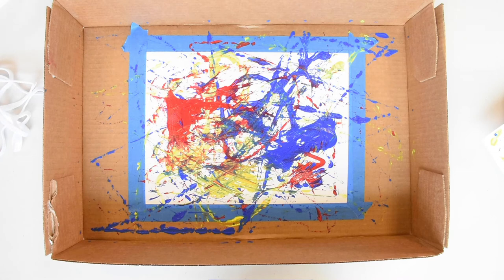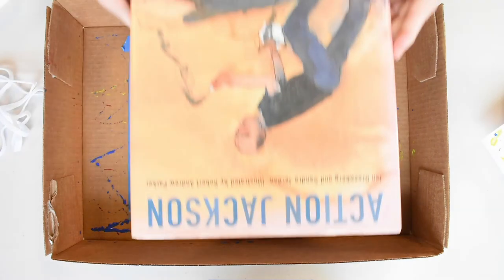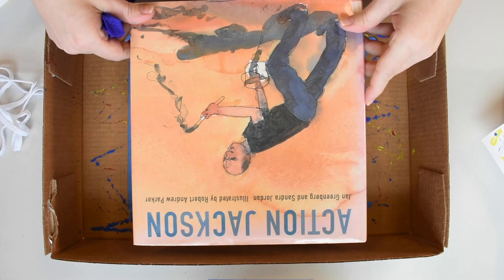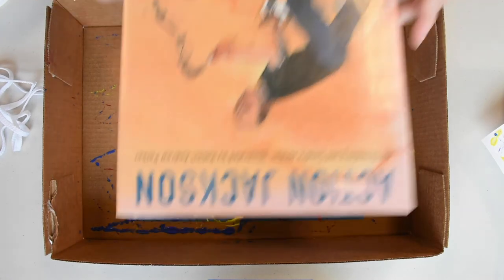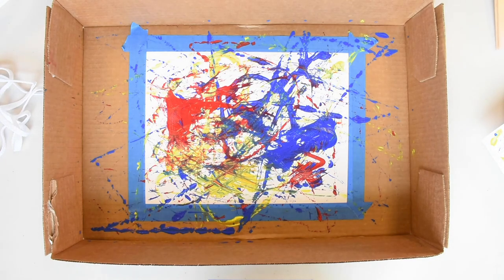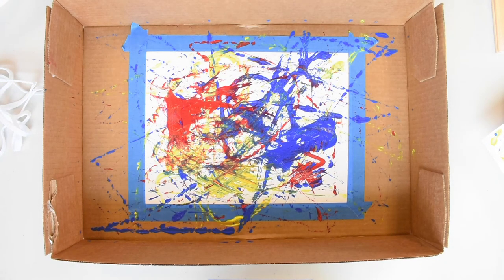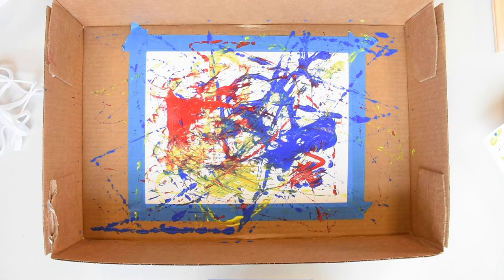So I have a couple of books to tell you about. This one is called Action Jackson by Jan Greenberg and Sandra Jordan and illustrated by Robert Andrew Parker. And it talks about how he made his paintings and a little bit about his life. And there's another one. It's a biography. It's called, get this, Jackson Pollock. And that one was written for us by Mike Venezia. And we have those books here at Midpoint Library. So be sure to check them out.